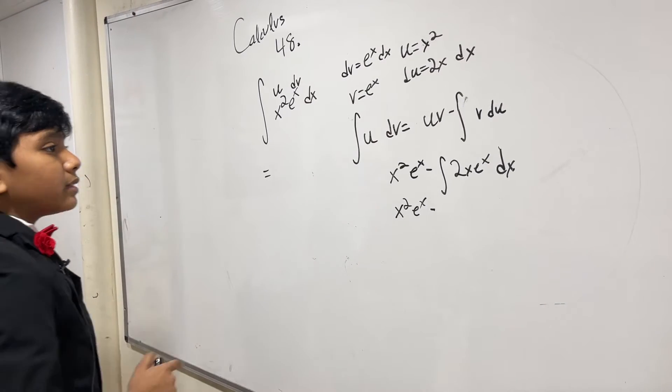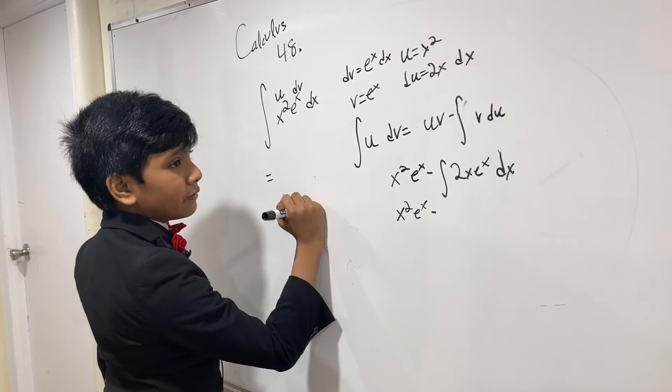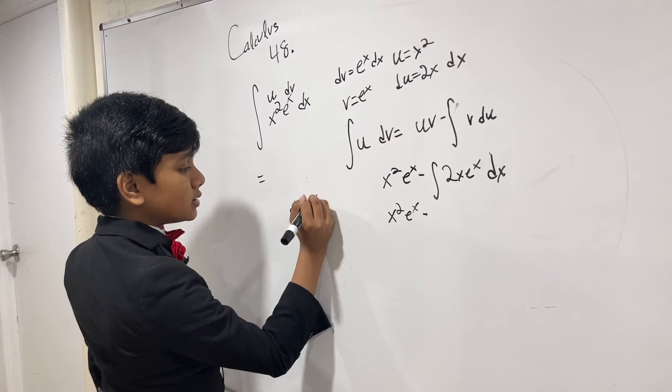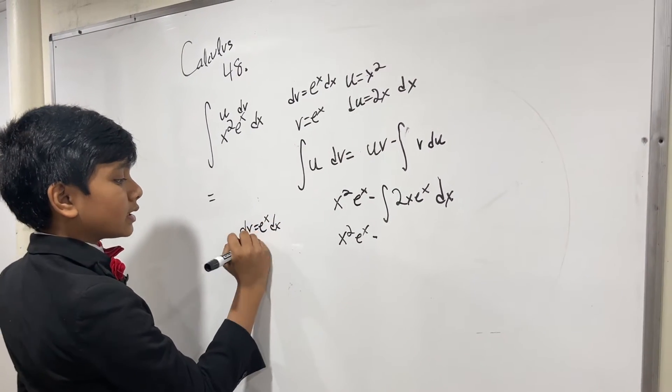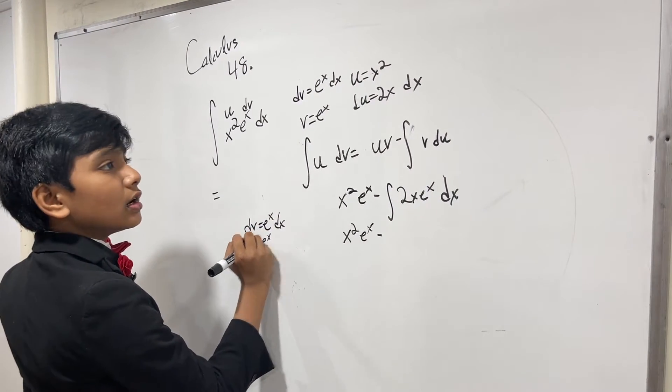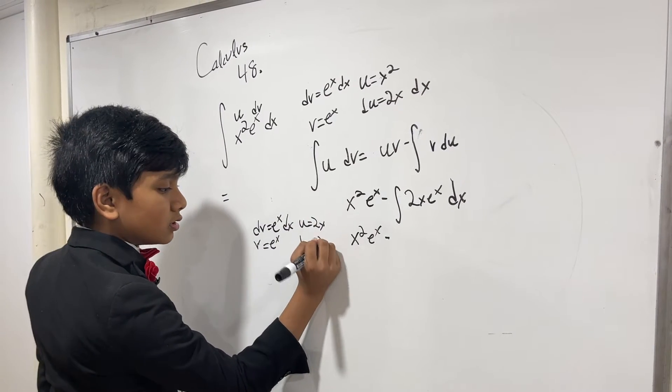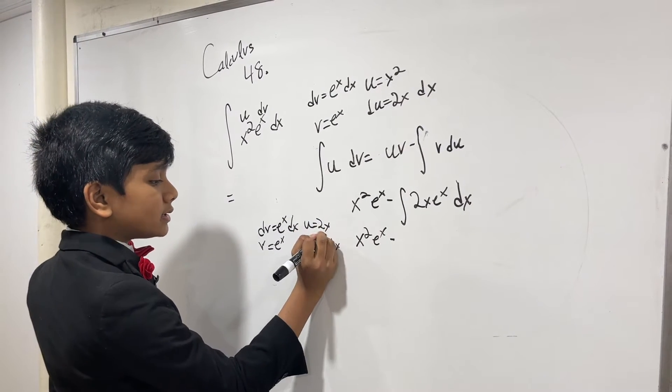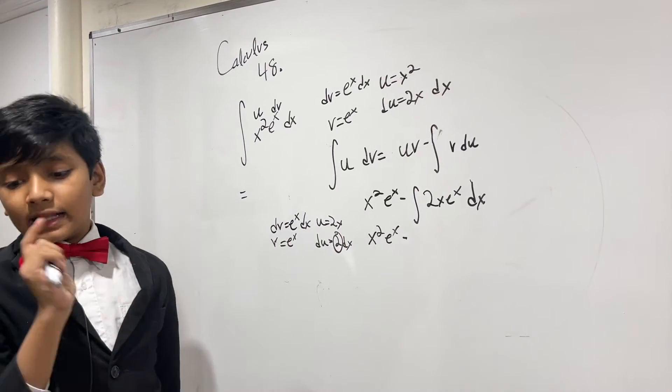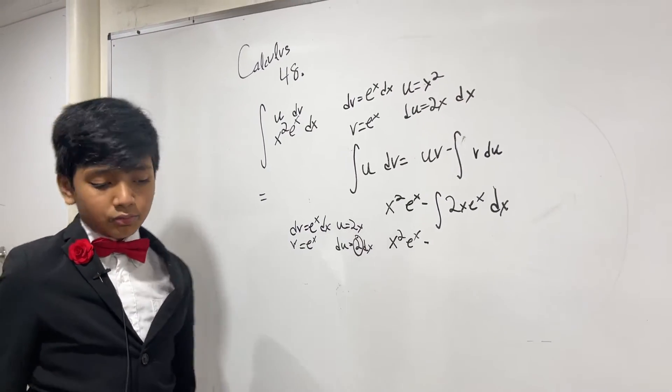So what do we do this time? Well, our dv is going to be e^x and our v is going to be e^x, but our u is going to be 2x and our du is going to be 2dx. And what's good is that our du is a constant—that's how you know you're close to finishing the problem.